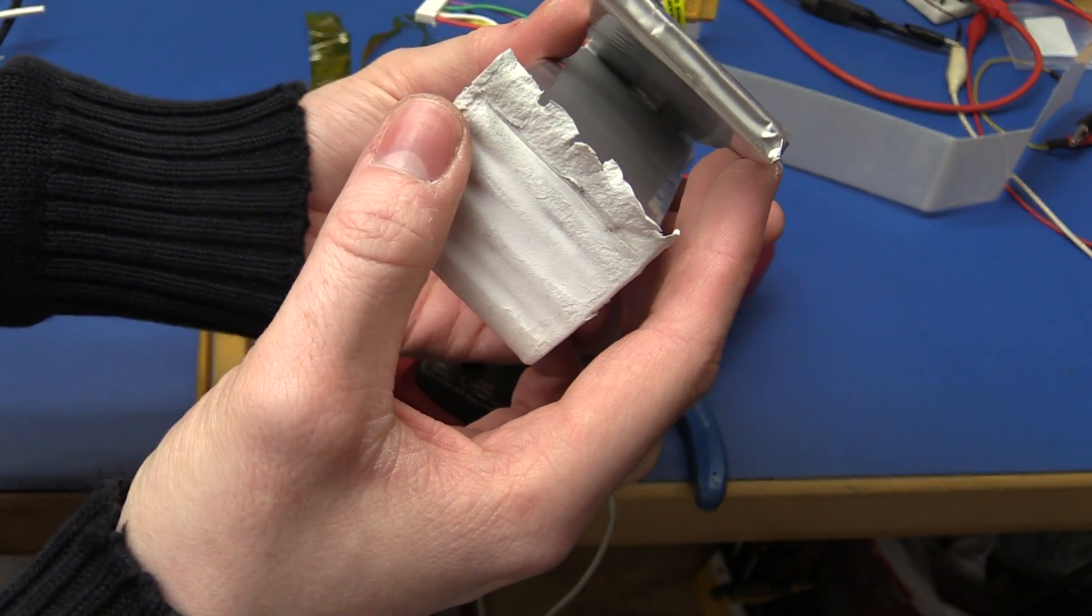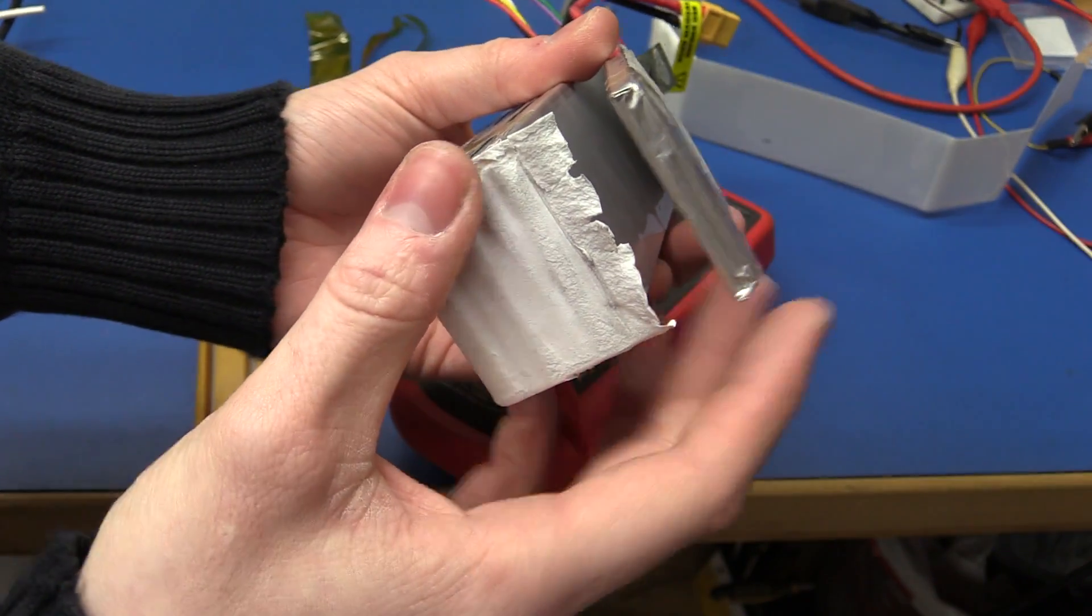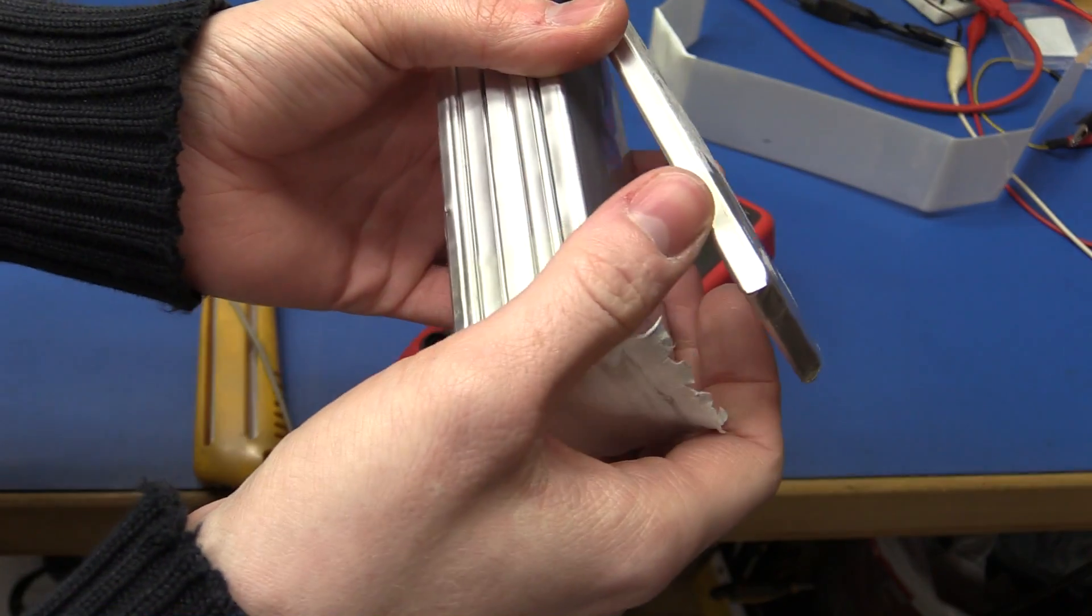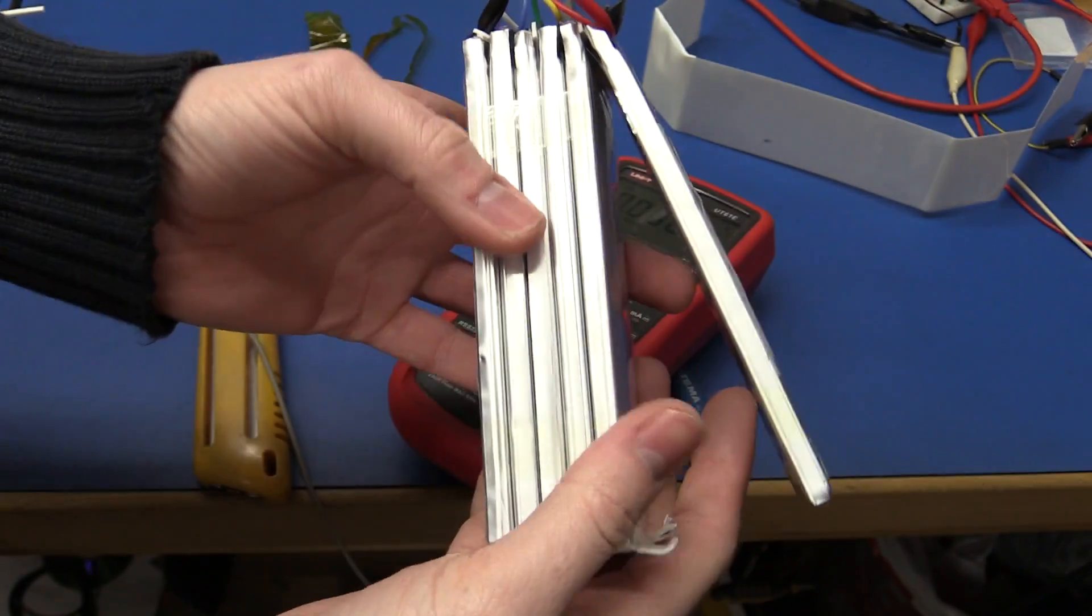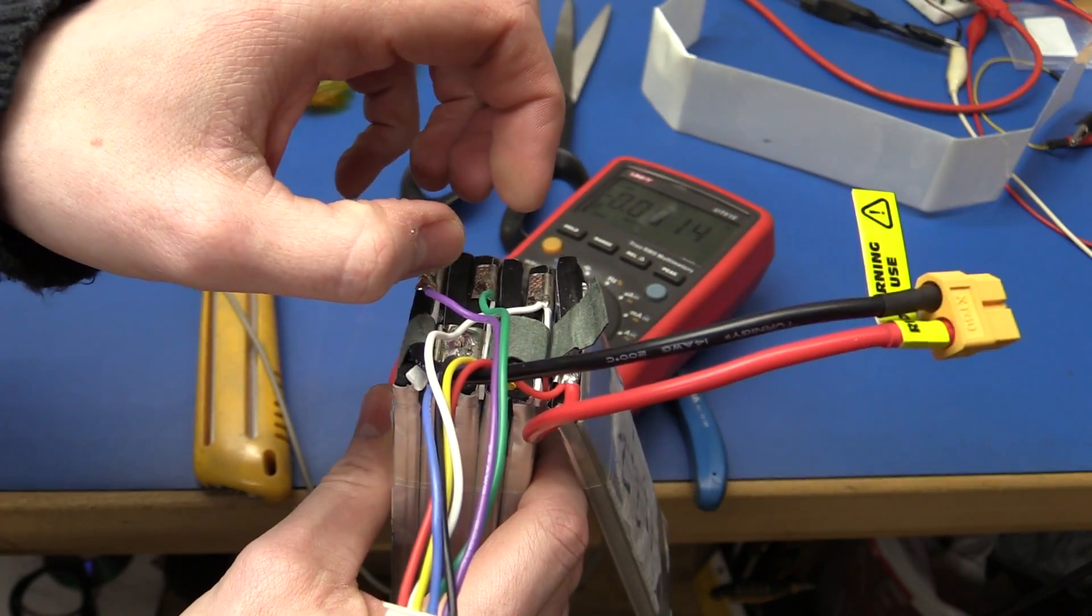The one on top here is the one that measures 1.8 or it measured 1.8 volts, now it measures three volts almost. But take a look at this, you can see it's very concave here. You might be able to see that on the camera and also on the top side. So it goes like this, the entire battery.